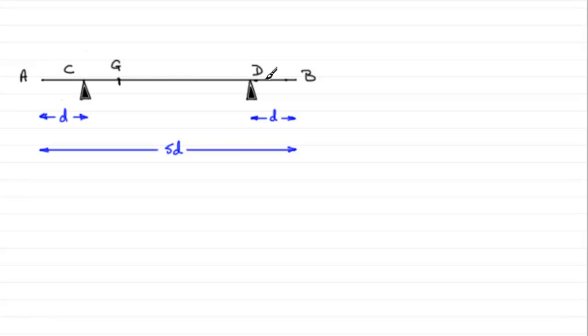Now we're told that this rod AB is a non-uniform rod, so in other words the weight won't act in the middle. We're told that it acts through this point G, the center of mass.